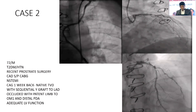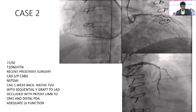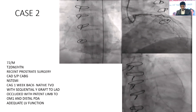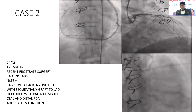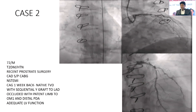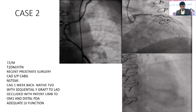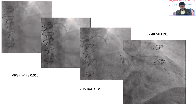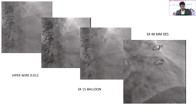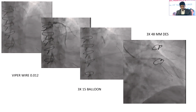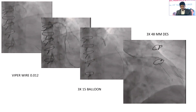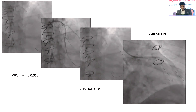Case 2: A 72-year-old male, post-CABG, presented with an NSTEMI. Angiogram one week earlier showed native triple vessel disease with a functioning Y graft to LAD, an occluded limb to LAD graft, an occluded limb to OM1 and distal PDA. We performed orbital atherectomy — the Viper wire was passed directly without requiring microcatheter exchange. After orbital atherectomy, we performed 3.5 mm balloon dilatation followed by stenting with a 3.5 by 48 mm stent, achieving a good result.